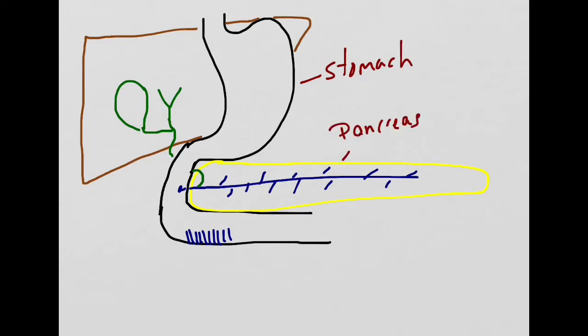This overview will be involving the stomach, pancreas, liver, gallbladder, and the first part of the small intestine called the duodenum.